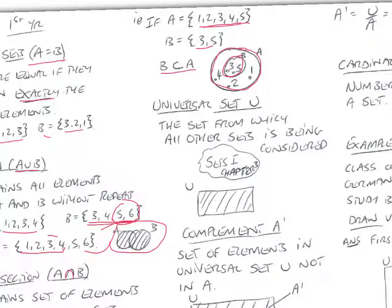The universal set then, U, is the set from which all other sets is being considered, as all those in there.